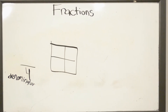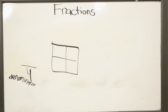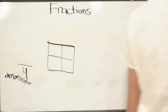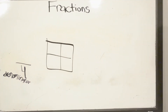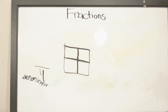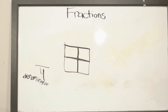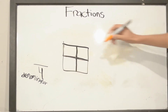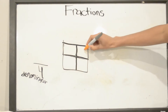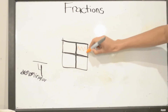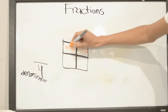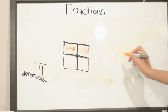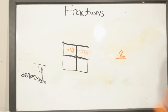Now we move on to the numerator. A numerator is the shaded part of a shape. So if we shaded 2 parts of the shape, our numerator will be 2.